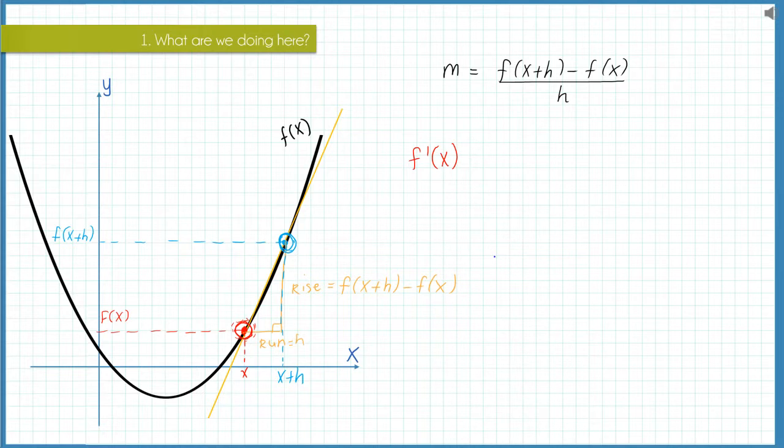So if we want to find that derivative we need to make the run really small so the points are close together. In fact, we would want to make our run which is of length h infinitely small.